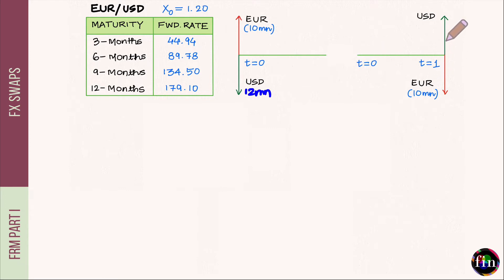To make the value of this contract zero as of today, the exchange rate connecting these two legs is the forward exchange rate. For this one-year period, the forward rate is 1.2 plus 179.1 divided by 10,000. So F0T equals 1.2 plus 179.1 divided by 10,000, which comes to 1.21791.